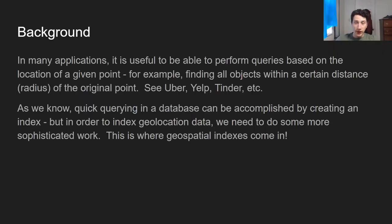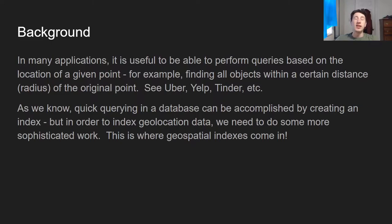Geospatial indexes, what are they? Basically in a ton of modern-day applications, there's some need to be able to do the following access pattern. We want to take one given point, like a coordinate with latitude and longitude, and find all of the other points in the database, perhaps of a certain type, that are within a certain distance of it, probably by radius. Examples of this happening are Uber finding a nearby driver, Yelp finding nearby restaurants, and Tinder finding nearby potential dating partners.